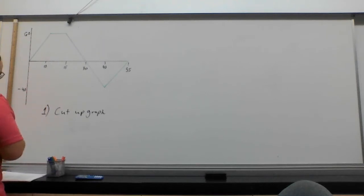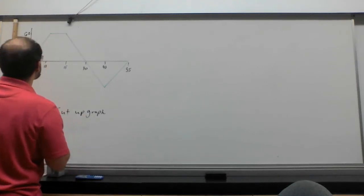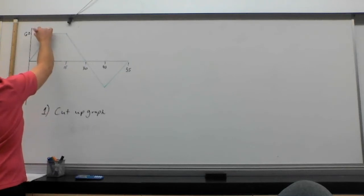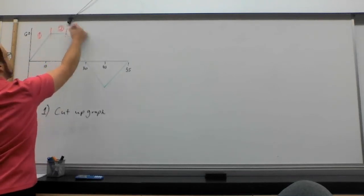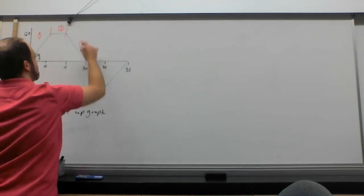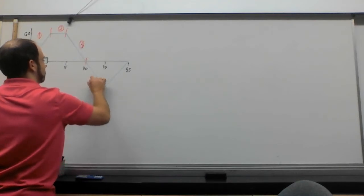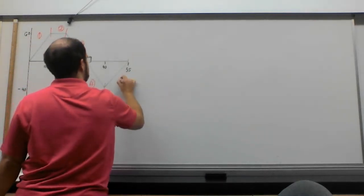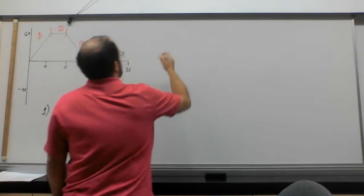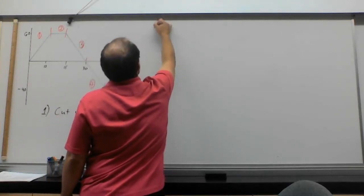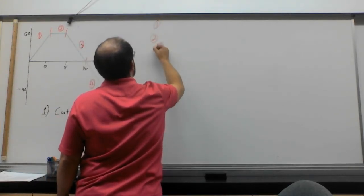So if we cut up the graph, let's use red. Then we're going to get here is one, here's two, here's three, good old four, and of course, five. And we're going to be working with these five areas.